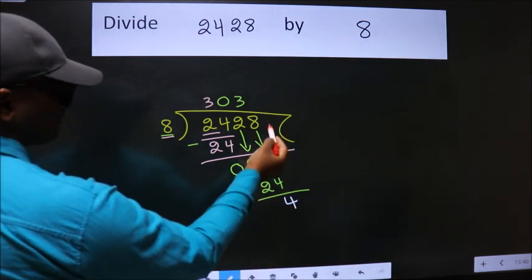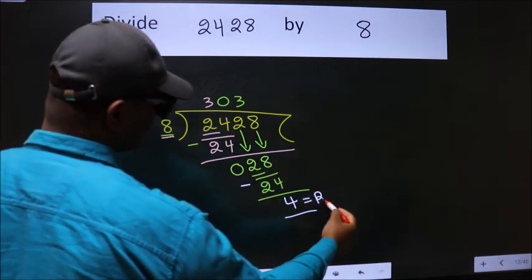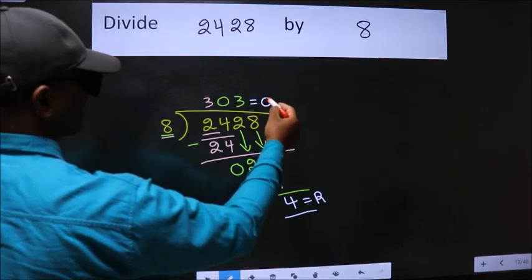No more numbers to bring down, so we stop here. This is our remainder. This is our quotient.